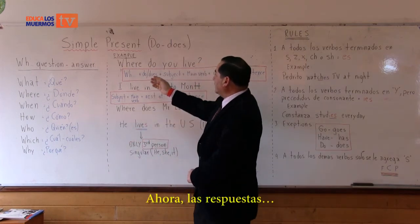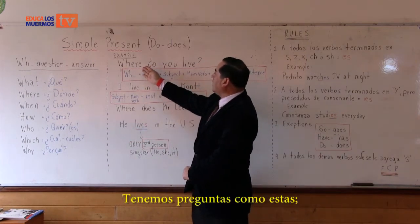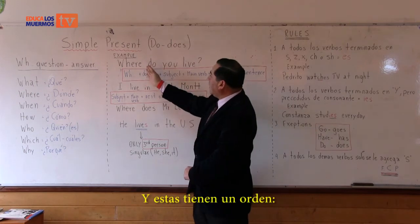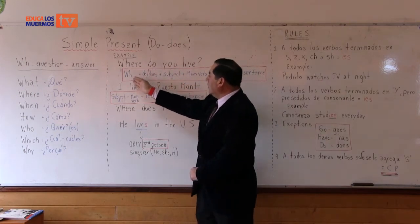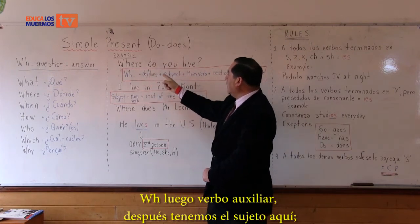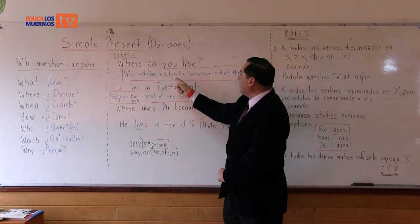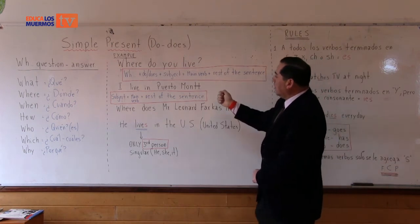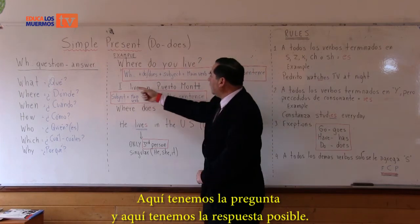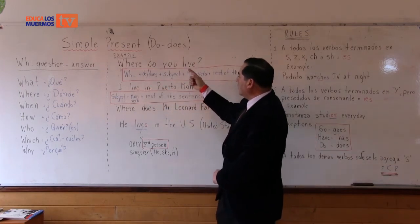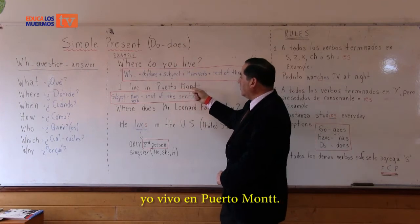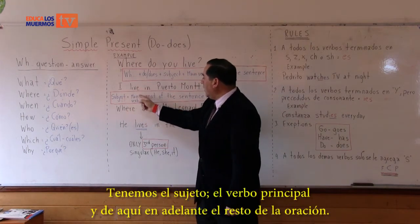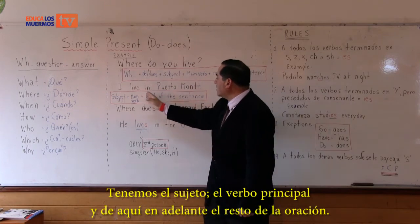Now, the answers. We have questions like this: 'Where do you live?' — que significa dónde vives. And this has an order — tiene un orden: WH, then auxiliary verb, then the subject, then the main verb, and sometimes the rest of the sentence. Here we have the question and here the possible answer: 'Where do you live?' — 'I live in Puerto Montt.' This sentence also has an order: subject, main verb, and the rest of the sentence.